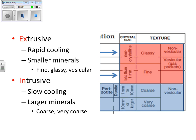If you look under the column for crystal size, it's either going to be non-crystalline — so that refers to glassy or vesicular — or you can have those that are less than one millimeter, which are fine texture. Then going to the coarse, the larger minerals are either one to ten millimeters, and the very coarse are ten millimeters or larger.